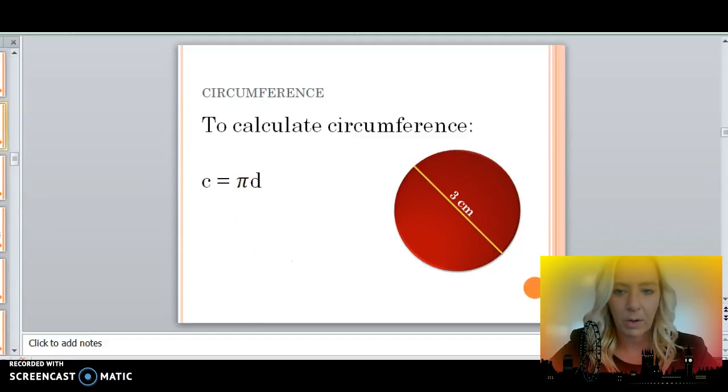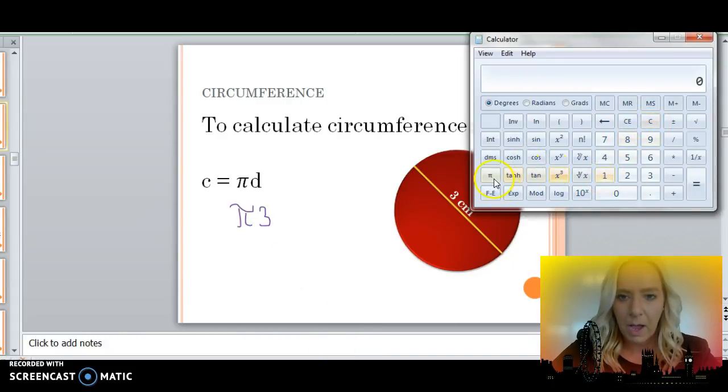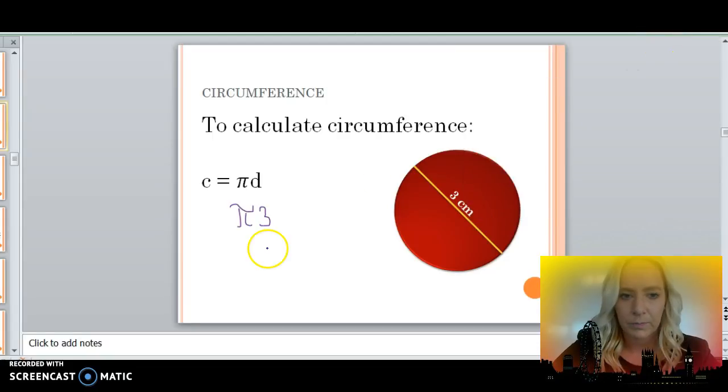Let's look at another example. Circumference is pi times the diameter. I'm going to take pi, or 3.14, times 3. Pi times 3 is equal to about 9.42 meters, because the unit of measurement is meters.